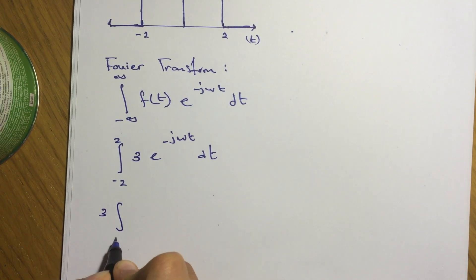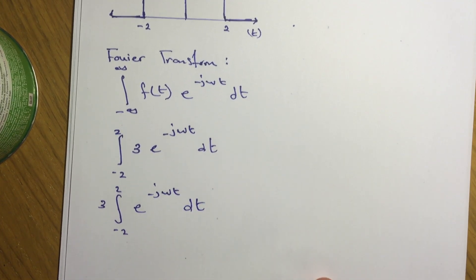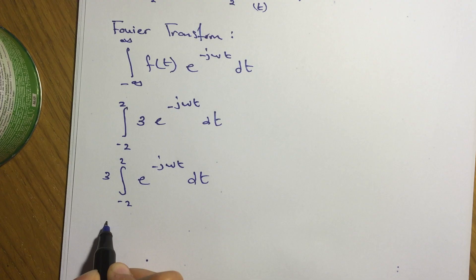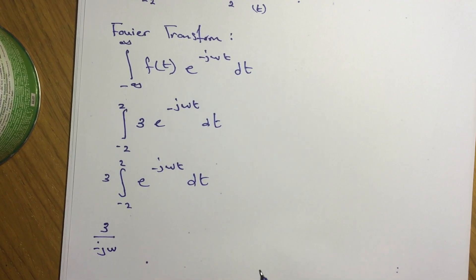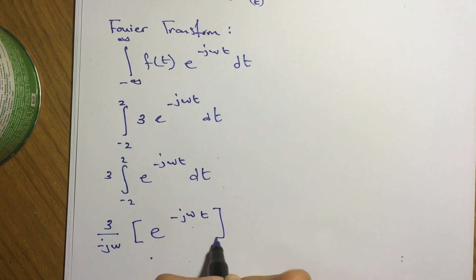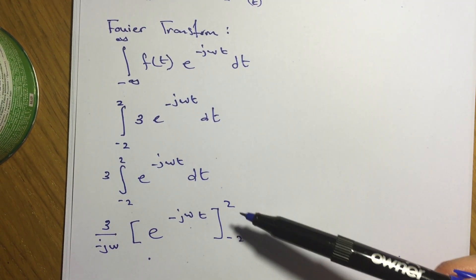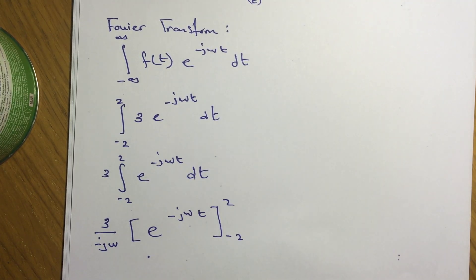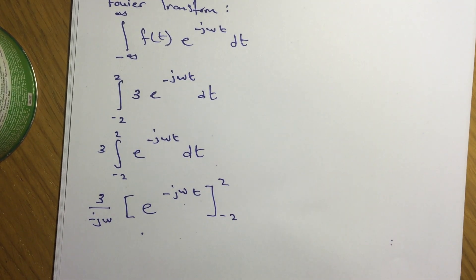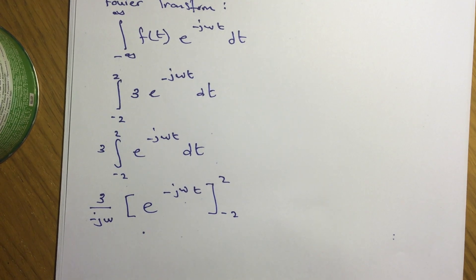So 3 times the integral from negative 2 to 2 of e to the negative j omega t dt. If we integrate this, it will give us 3 over negative j omega times e to the negative j omega t, evaluated from negative 2 to 2. If you want me to do a video on how to integrate exponential forms, just tell me in the comment section below and I'll do a video on that.